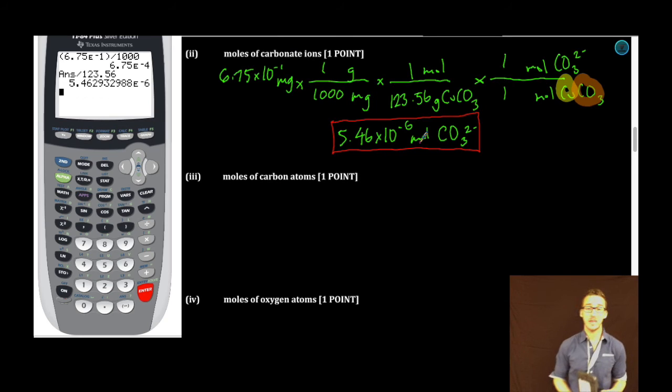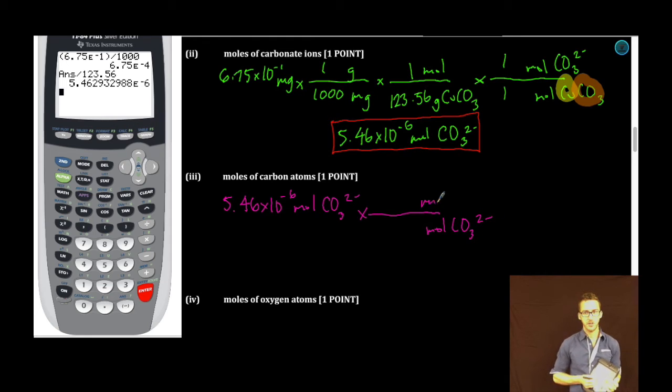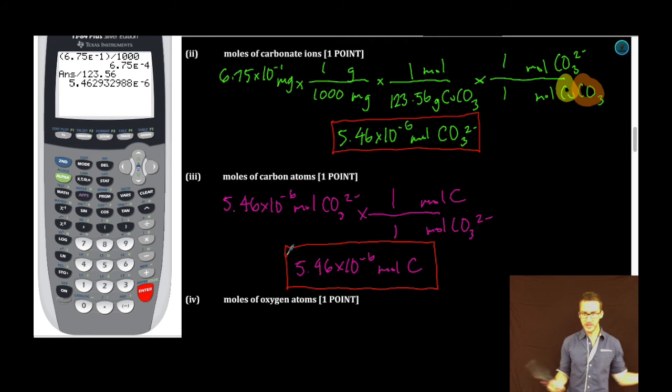Moving right along to subpart III: moles of carbon atoms. Well, we just determined in subpart II that we have 5.46 times 10 to the minus six moles of carbonate ions. And if we know how many moles of carbonate ions, we can determine the number of moles of carbon. Because what is the relationship between moles of carbon and moles of carbonate? It's a one to one relationship. So we know that we also have 5.46 times 10 to the minus six moles of carbon. What a fantastic free response. Getting points for just multiplying things by one.